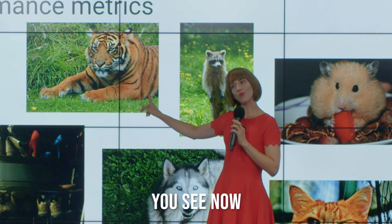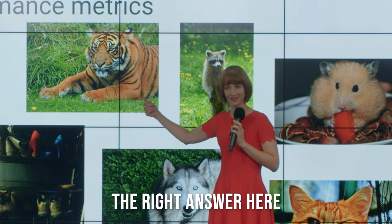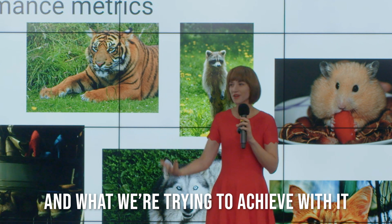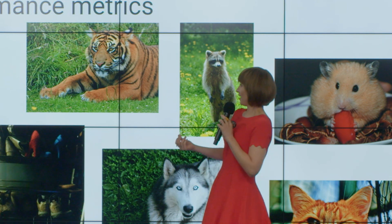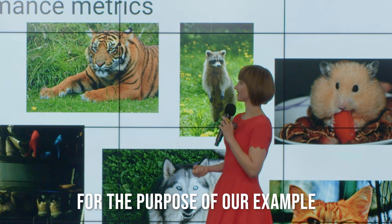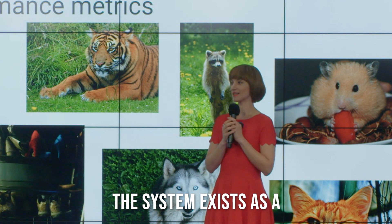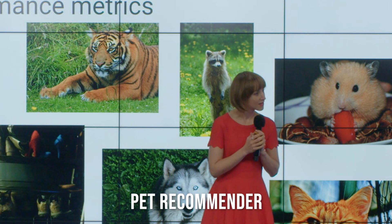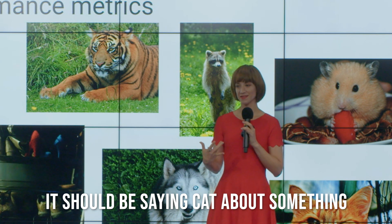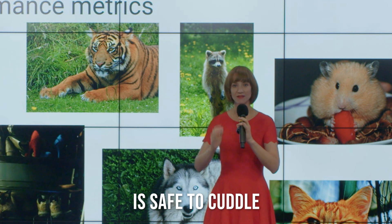You see now why the decision maker is so important. The right answer here depends on why the system exists and what we're trying to achieve with it. So I'd better fill those big shoes for the purpose of our example. The system exists as a pet recommender, and whenever it says cat, it should be saying cat about something from the cat family which in its standard adult form is safe to cuddle.